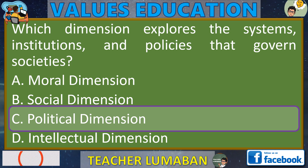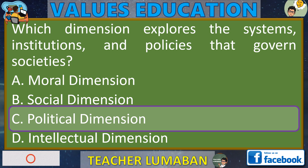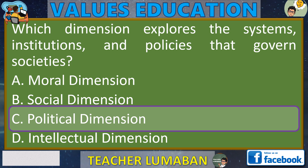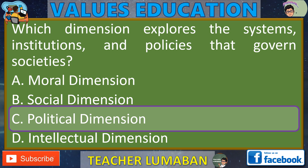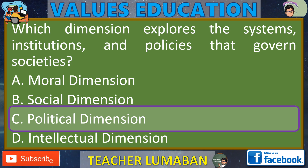Explanation: The Political Dimension explores the systems, institutions, and policies that govern societies. It focuses on the exercise of power, decision-making processes, and the structure of governance within a society. This dimension examines political institutions, such as governments, legislatures, and political parties, as well as the policies and laws that shape society. Sinasaliksik ng dimensyon political ang mga sistema, institution, at patakarang namamahala sa mga lipunan. Nakatoon ito sa paggamit ng kapangyarihan, mga proseso sa paggawa ng desisyon, at istruktura ng pamamahala sa loob ng isang lipunan.